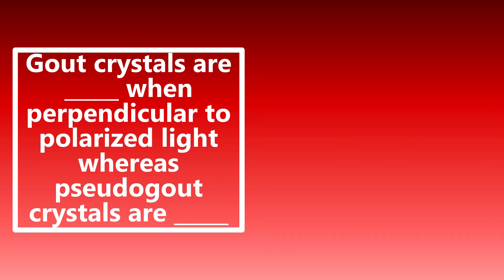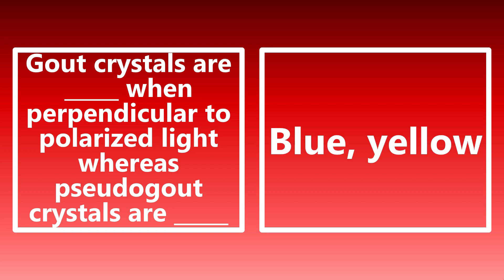Gout crystals are blank when perpendicular to polarized light, whereas pseudogout crystals are blank. I have seen this come up in board questions for the ITE and qualifying exam. Gout crystals are blue when perpendicular to polarized light, whereas pseudogout crystals are yellow. Try to commit that to memory — it's a silly question but you may see it on exam day.